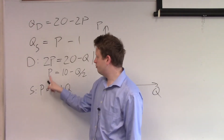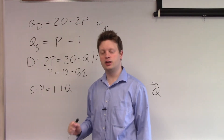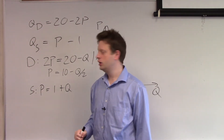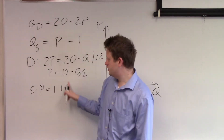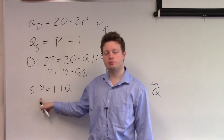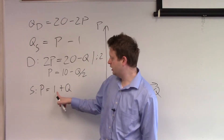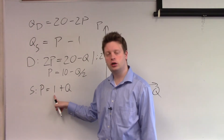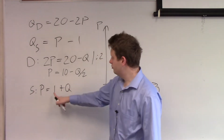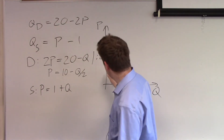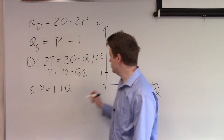Now that we've brought demand and supply into the right format, we can think about drawing these two. For supply, P equals 1 plus Q, meaning there is an intercept of 1 and a slope of 1. So the supply starts at 1 and is upward sloping.